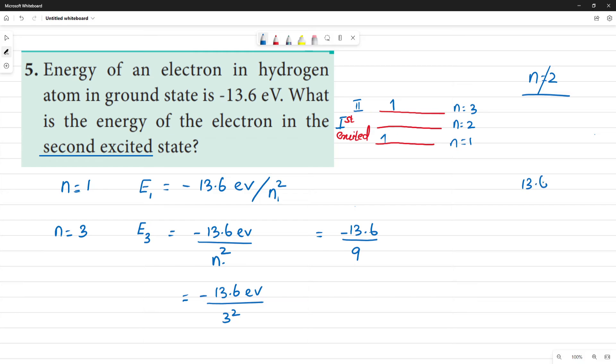So, 13.6 divided by 9, bottom line, 1, 9 is 9 remainder 4.6. 5 nines are 45, 1 varu 0 bottom line 1. The answer is minus 1.51 electron volt.